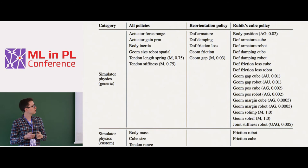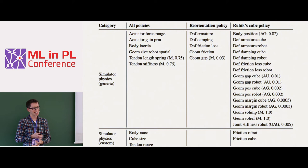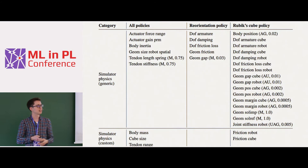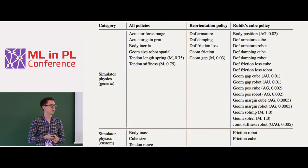We also randomize many physical parameters of the system: armature damping and friction coefficients, actuator force ranges and gains, and even the direction and magnitude of the gravity vector. In fact, we randomized all available parameters in the physics simulator, which is very easy because we don't have to specify all the ranges — ADR takes care of that. The ranges of all these randomizations are controlled with ADR.